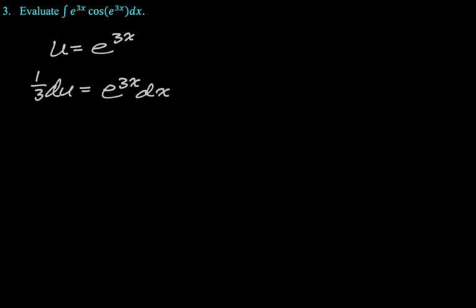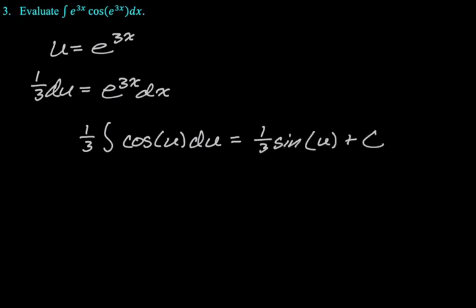Then we're going to make our substitution. So e to the three x dx becomes one third du. So we'll have one third because you always pull out the constant multiple, cosine of u and du. Antiderivative cosine is sine, so we're going to have one third sine of u plus c. But then of course u is e to the three x, so our final answer is one third sine of e to the three x plus c. And that's it for this problem set. I hope this was helpful and good luck.